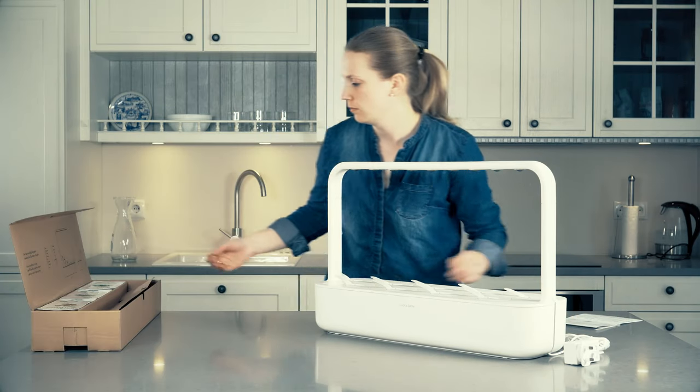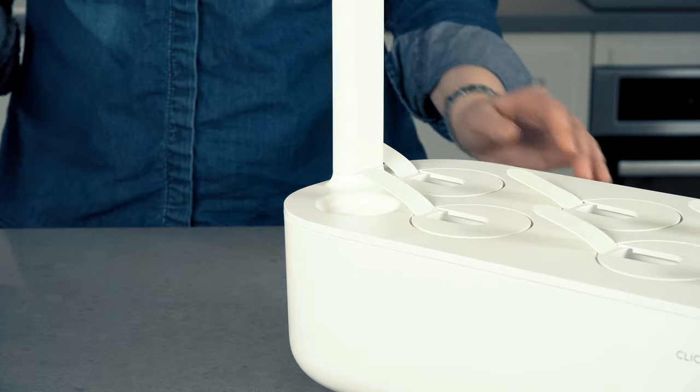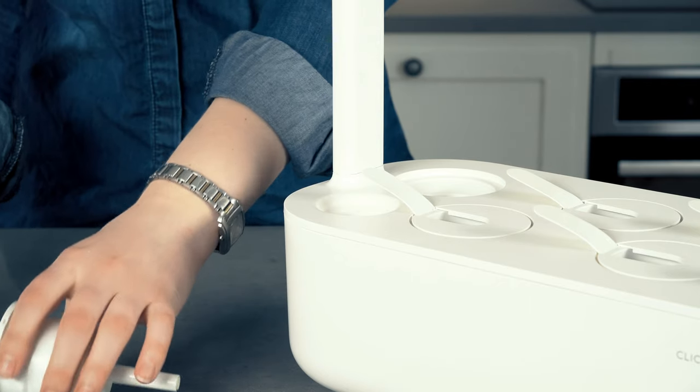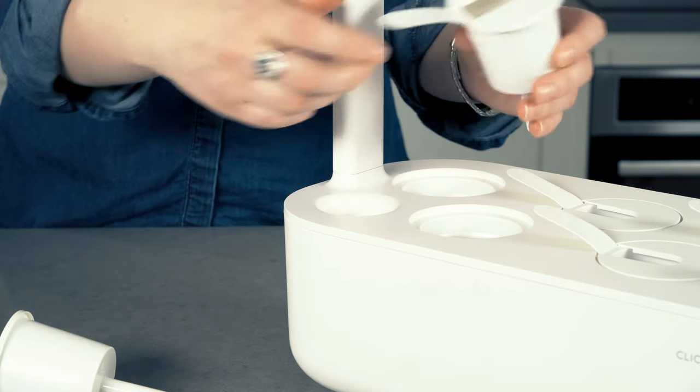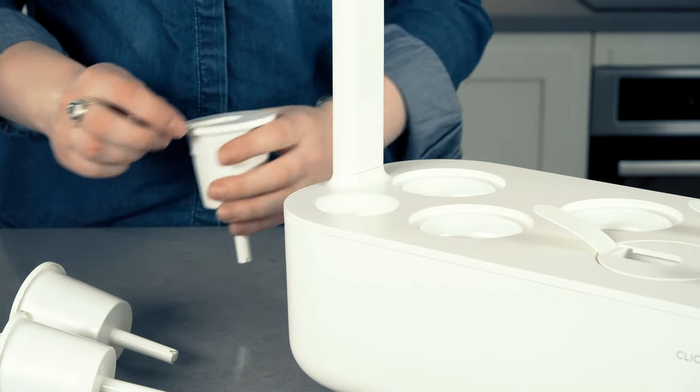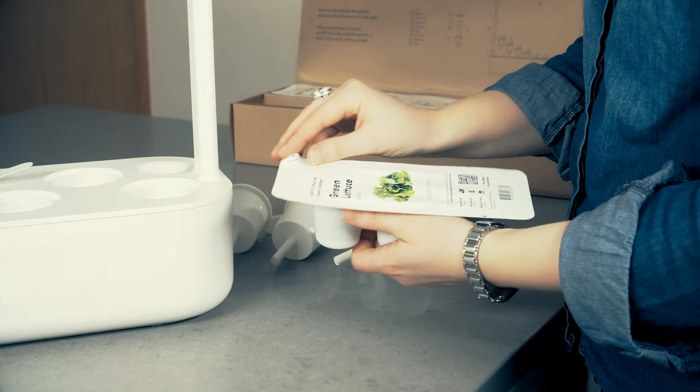Now it's time to insert your smart soil plant pods into the garden. Remove the U-shaped lids from the plant cups and put them on the side for the time being. Remove the pods from their package and insert them into the plant cups.